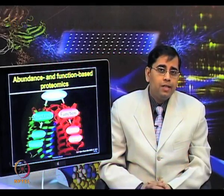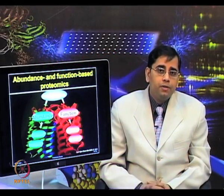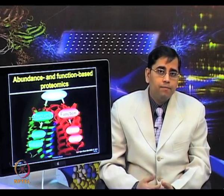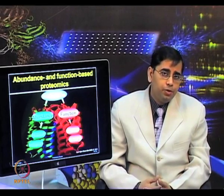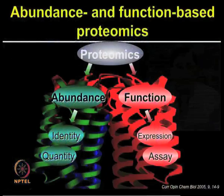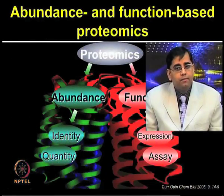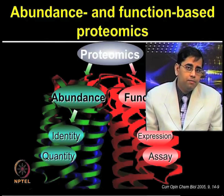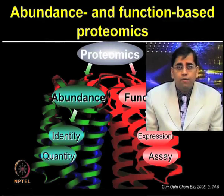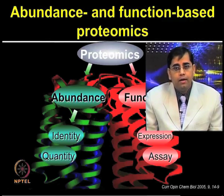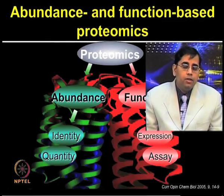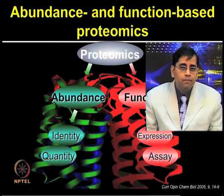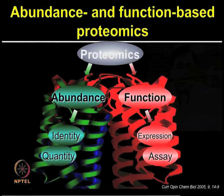The proteomic discipline can be grouped under two major disciplines: abundance proteomics and functional proteomics. The abundance-based proteomics aims to measure the abundance of protein expression, whereas the functional proteomics aims to determine the role of proteins by addressing protein interactions and their biochemical activities.